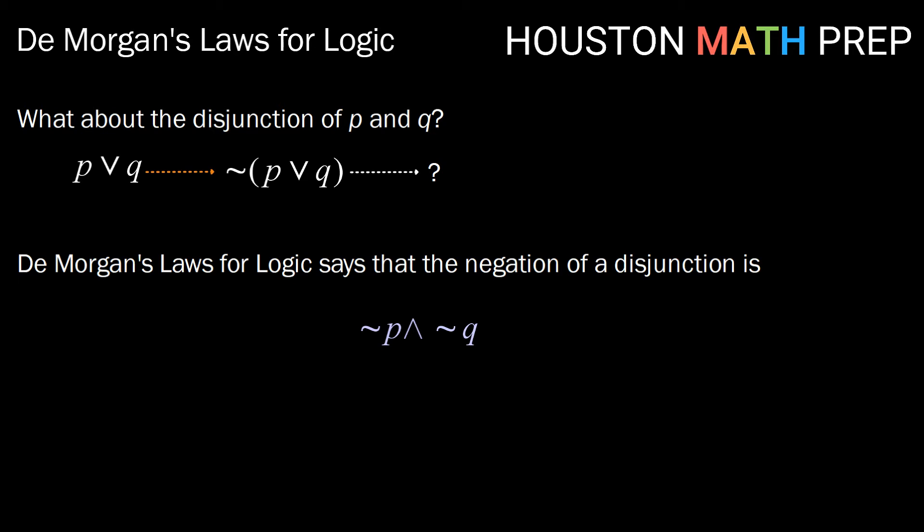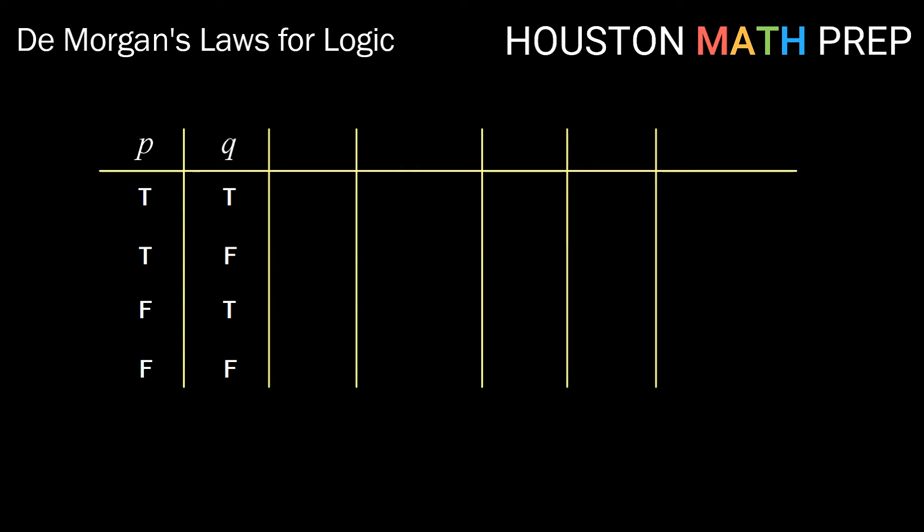Once again, let's sort of prove this to ourselves using the truth table. So starting, of course, with P and Q in our normal organization, if we make the truth values for P or Q, we'll get true anytime at least one of them is true, true, true, true, false. If we then take the negation of that, then we should get false, false, false, true.